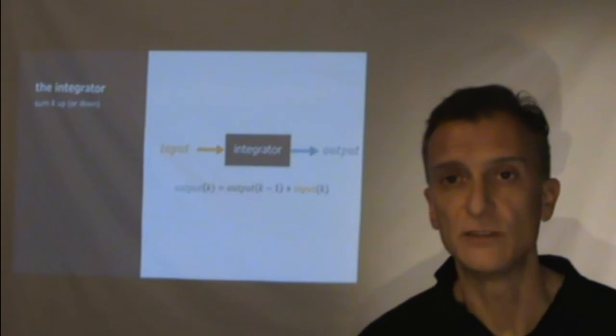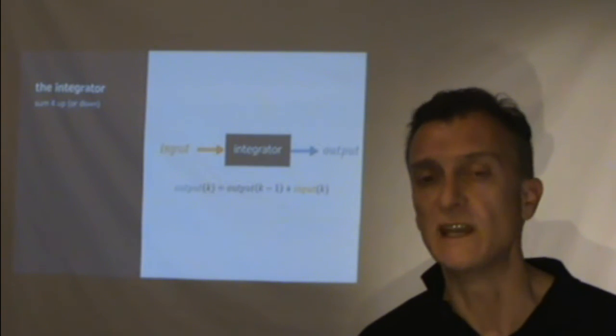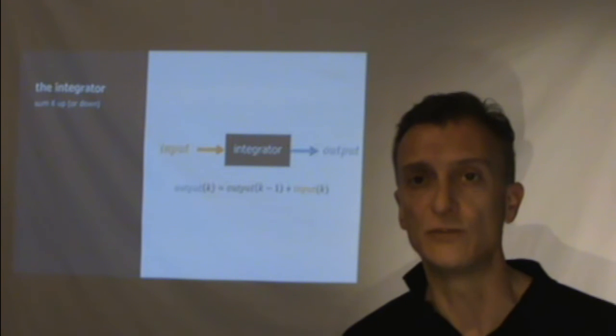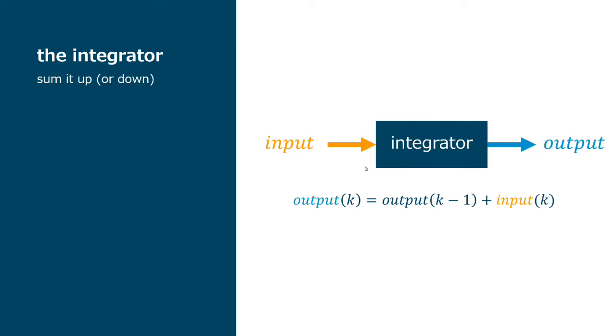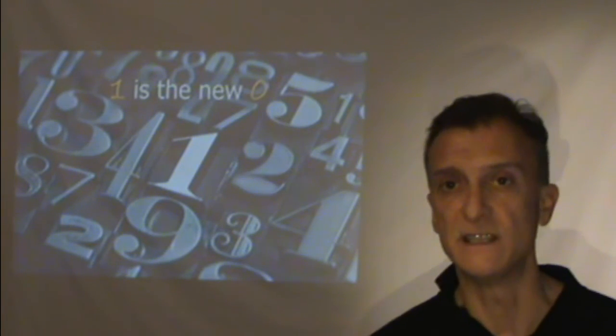But if you put the input to zero, it will keep it. So, the output in time k will be equal to the output in k minus one. And this is something that we already have for the continuous time system. When the input goes to zero, the output will remain constant. So, in a sense, if you make the transfer function of this system, and we did that last week, we see that the transfer function of the integrator has a pole in z equal to one. So, z equal to one is the new s equal to zero that we had in the first semester. So, the integrator will be a pole at z equal to one.